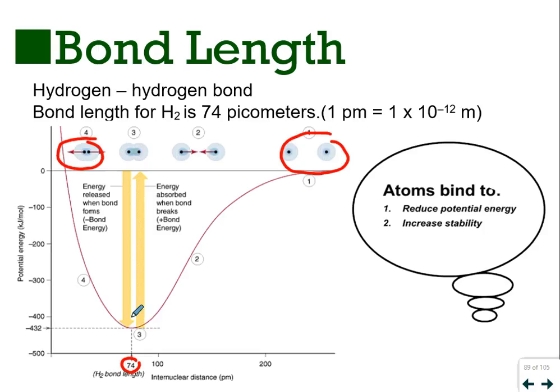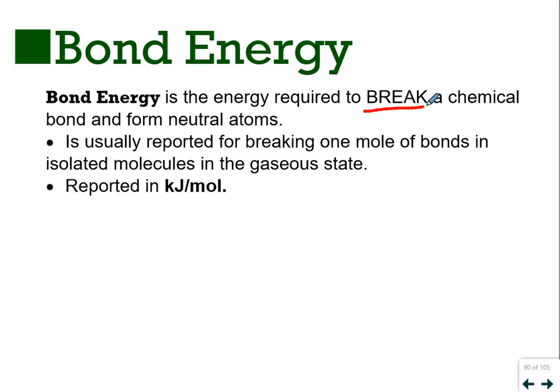Bond-making releases energy. This is true of all chemistry: making a new bond releases energy, breaking bonds costs energy. Take your time and pause to read this. Remember, atoms bind to reduce potential energy. It went from effectively zero to negative 432 kilojoules per mole when the two hydrogen atoms came together. They are more stable together than apart.